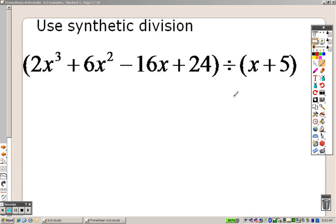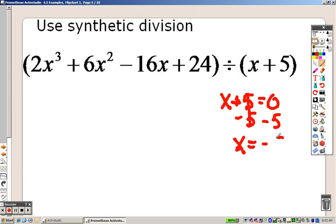We used synthetic substitution before, so that's what we're going to work on here. This is x plus 5, right? So if we set that up to equal 0, we subtract 5 on both sides, and we're getting x equals negative 5. Remember in 6.2 when we were doing synthetic substitution? That's basically what we're doing here now.